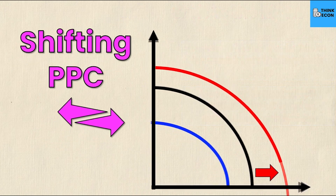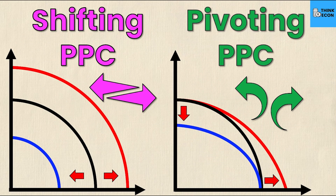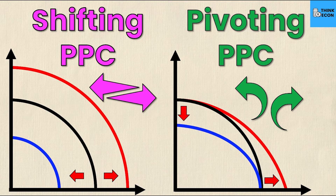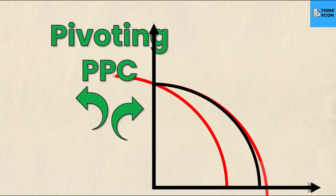Shifting the PPC is the easy part. At the end of this video we'll look at four different examples where I'll ask what you think will happen to the PPC in each scenario. These are the types of questions you'll see on a quiz, a unit one test, and your final exam. Now let's turn our attention to pivoting the PPC.